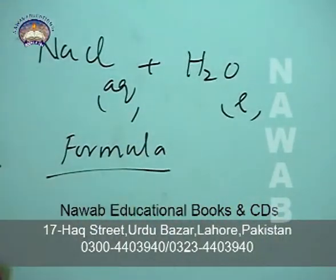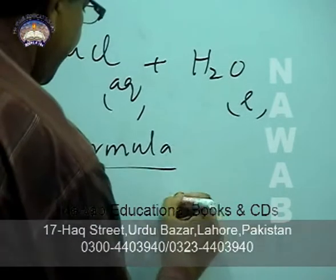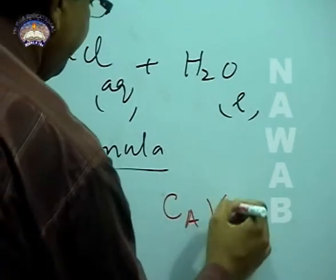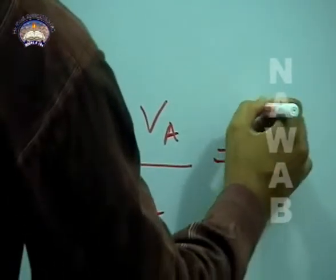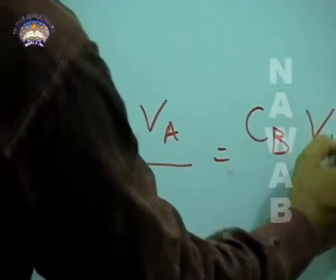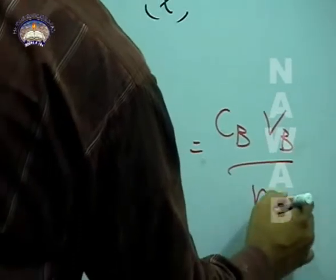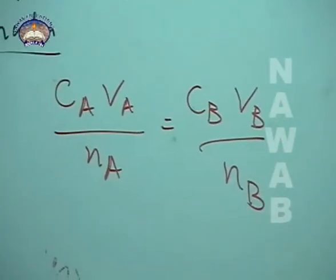In this case, the formula is: CA VA over NA is equal to CB VB over NB. This is called as titration formula.